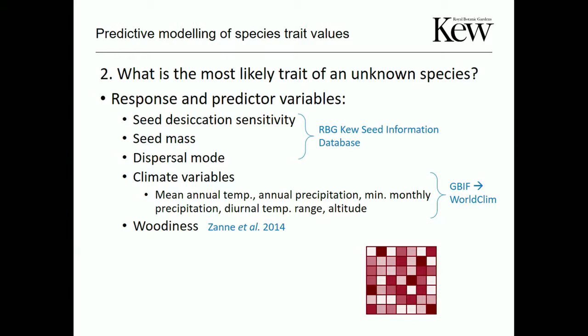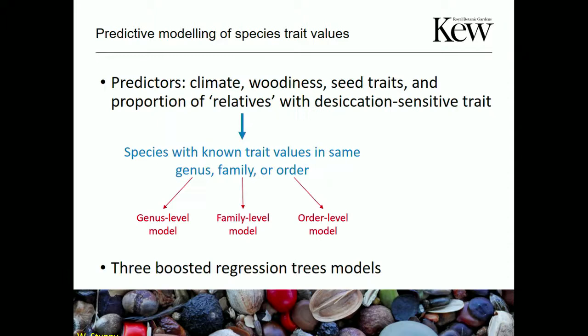For the second aim, we compiled a database from Kew's seed information database, Zanne et al.'s paper on woodiness, and GBIF for species distributions, with WorldClim for climate variables. Predictive variables include climate, woodiness, seed traits, and the proportion of a species' relatives with the desiccation-sensitive trait — at genus, family, and order levels.